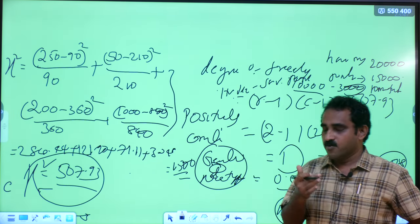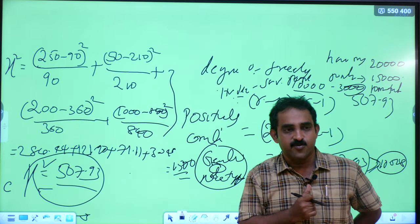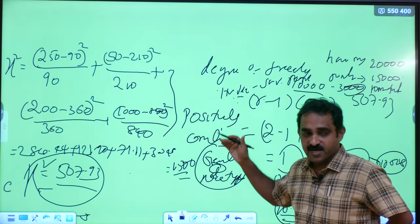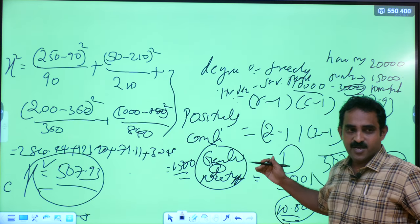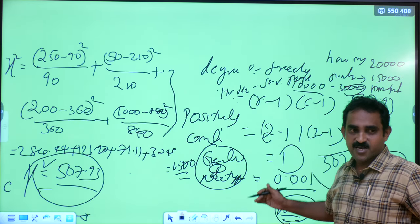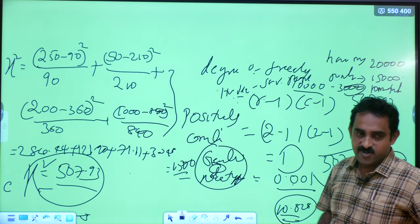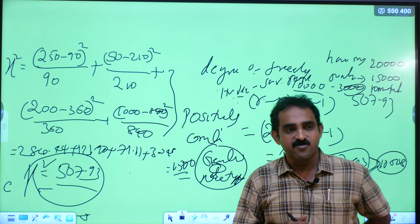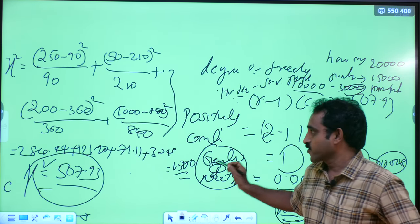This is one part of data pre-processing. The different steps in data pre-processing are: data cleaning, data integration, data transformation, and data reduction. In the next class, we will continue after data integration and discuss data transformation. Thank you.